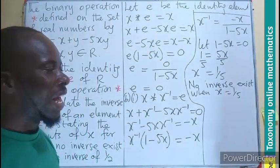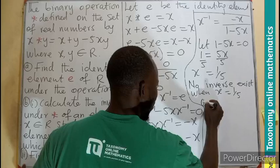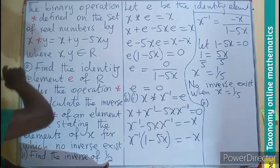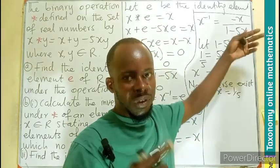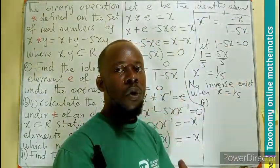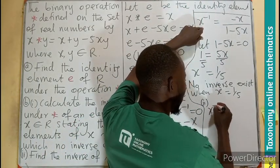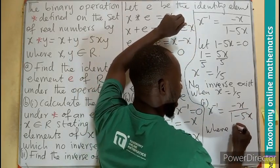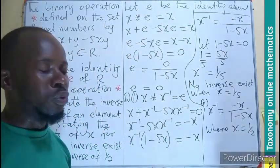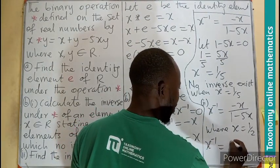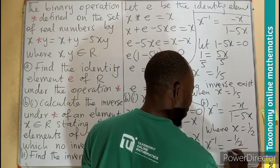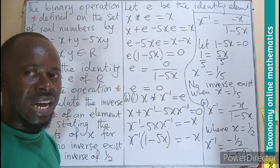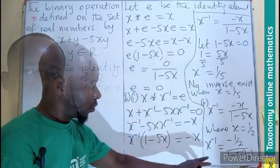So no inverse exists when x is one-fifth. The last part of the question says that we should find the inverse of half. It means we are picking the first element, replacing the x with half to see what the inverse will be in terms of value, but not in terms of algebraic expression. So I have my inverse, giving us negative x over 1 minus 5x where x is equal to half. So we do substitution. Your inverse will be minus half divided by 1 minus 5 times half.